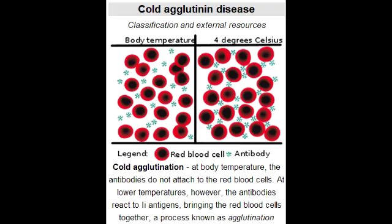What is cold agglutinin disease? Cold agglutinin disease is an autoimmune disease characterized by the presence of high concentration of circulating antibodies, usually IgM, directed against red blood cells. This condition is a form of autoimmune hemolytic anemia in which the antibodies only bind red blood cells at low body temperatures.